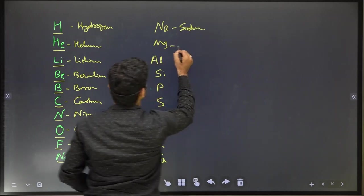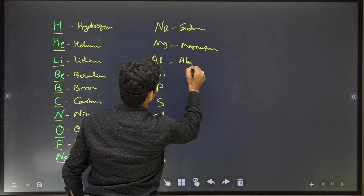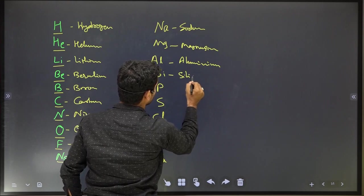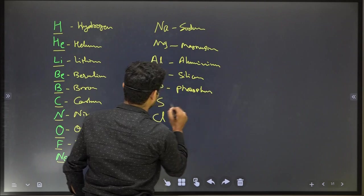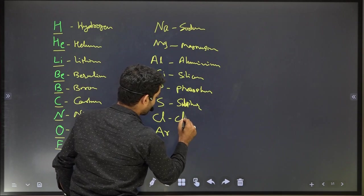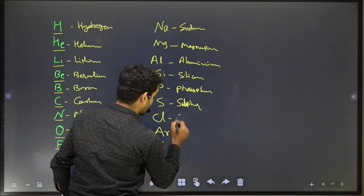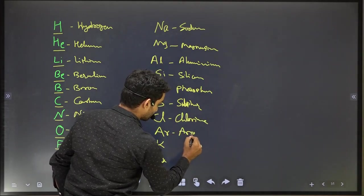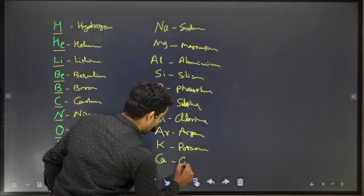So the full sequence from element 11 to 20 is: Sodium, Magnesium, Aluminium, Silicon, Phosphorus, Sulphur, Chlorine, Argon, Potassium, Calcium.